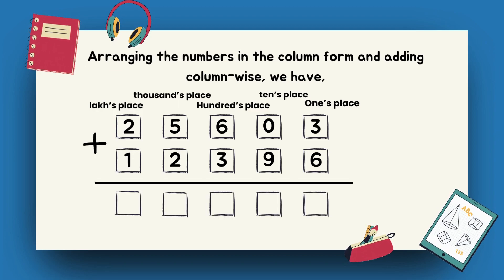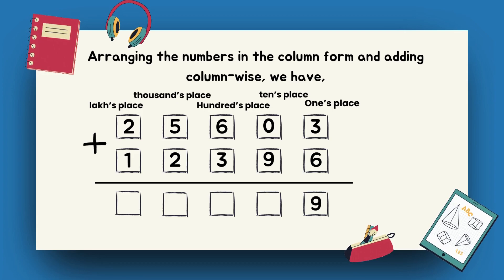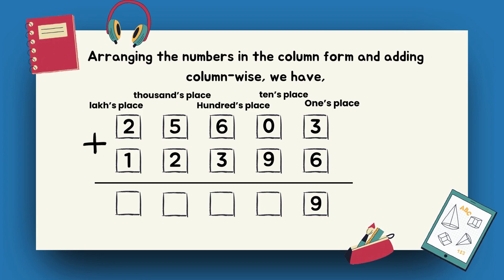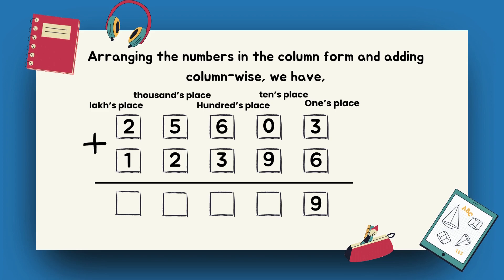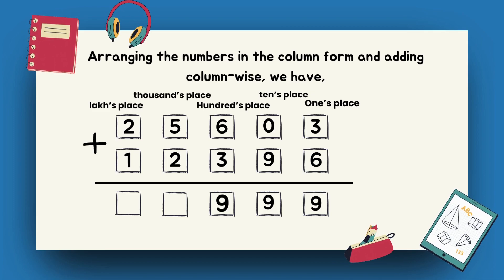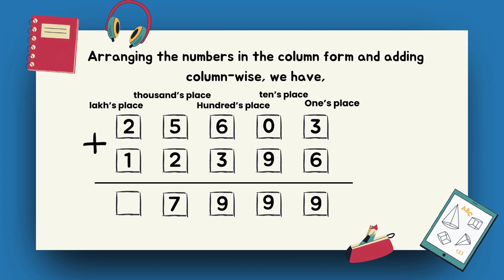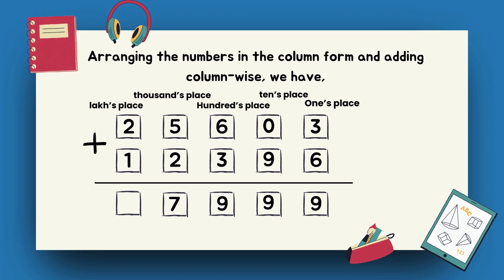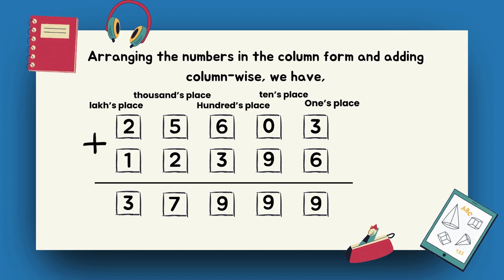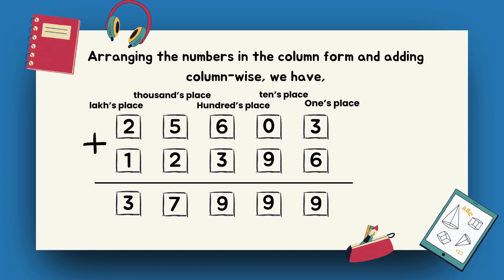Let's start by adding digits at 1's place. 3 plus 6 becomes 9. Then moving to 10's place, 0 plus 9 becomes 9. Now, moving to 100's place, 6 plus 3 becomes 9. For 1000's place, 5 plus 2 becomes 7. For lakh's place, 2 plus 1 becomes 3. Thus, 25603 plus 12396 is equal to 37999.